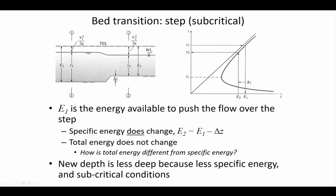Looking at the diagram: what is the maximum delta Z that can be tolerated? The delta Z can only go as far as the energy associated with the critical depth. Once delta Z goes further than the energy associated with the critical depth, that's when choking will occur.